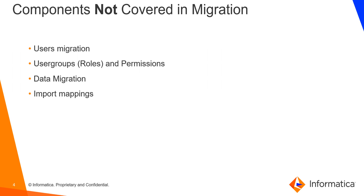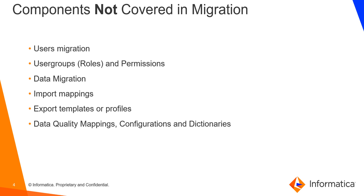As there is no data migration, there will not be migration of import mappings, export templates, or profiles. Those have to be migrated manually using REST API calls, recreated from the UI, or saved from the lower environment and loaded as a file through the rich client. Data quality mappings and configuration dictionaries are also not covered as part of the migration. Finally, trigger configurations related to DQ and BPM are also not covered. These need to be recreated or taken care of by the project team whenever there is an environment transfer.